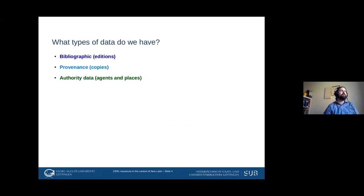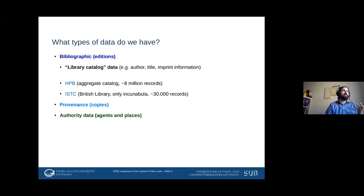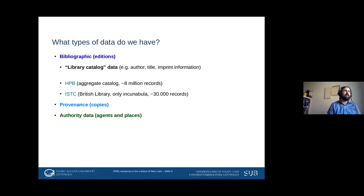What types of data do we have? I'd roughly partition it into three types: bibliographic, provenance, and authority data. Bibliographic data means data at the level of the editions — the print runs of books — comparable to classical library catalog data. This includes things like who's the author, what's the title, when and where was it printed. We have two major databases with bibliographic information.